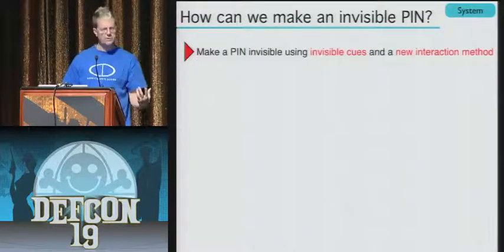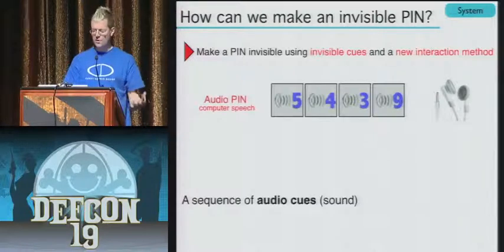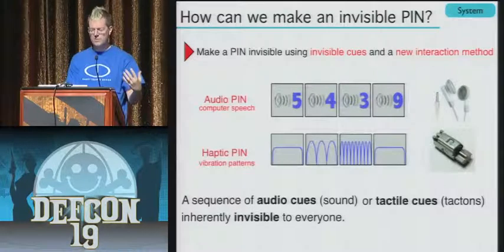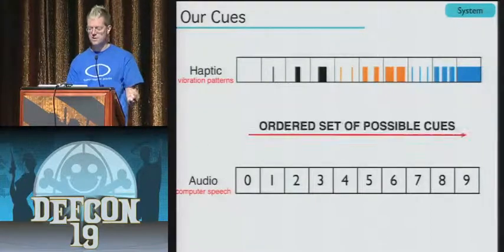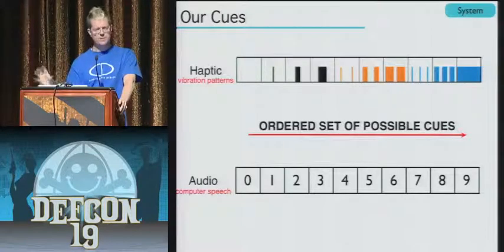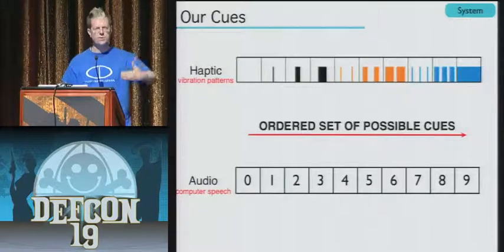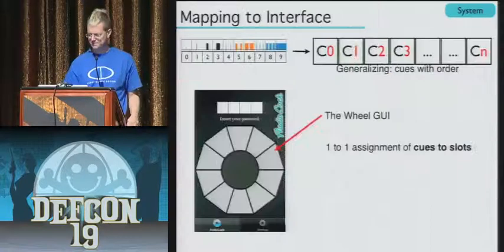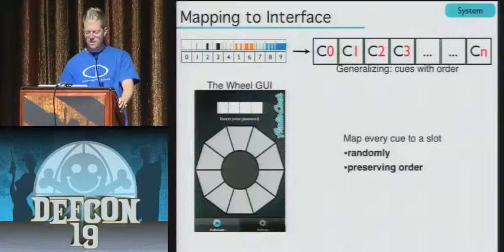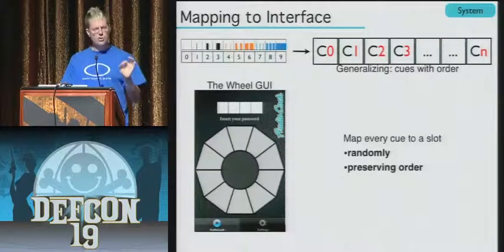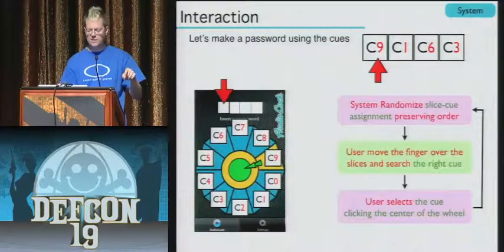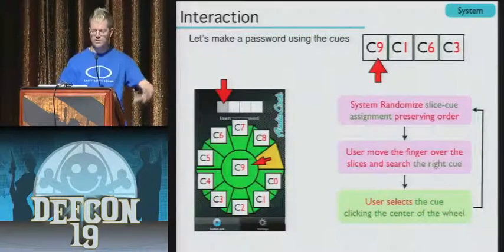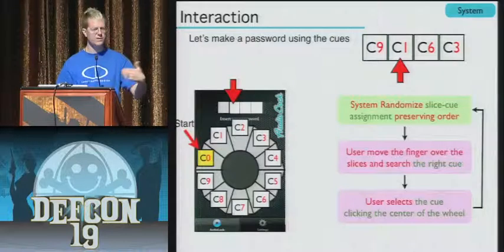Now with mobile phones, we have vibration motors in them. We can do the tactons and we also have audio output. For a numeric PIN, we could use text-to-speech to speak out those numbers. So we have a sequence of cues, either auditory or tactile, that can be invisible to everyone if headphones are used for the audio. To compare haptic and auditory cues for decimal PINs, we need more tactons — ten vibration patterns corresponding to ten digits, ordered from single pulses to double pulses to triple pulses to continuous. Here's the touchscreen version of the rotary wheel interface — ten slots for ten digits, assigned with a one-to-one correspondence, preserving order but randomizing the start point for observation resistance.